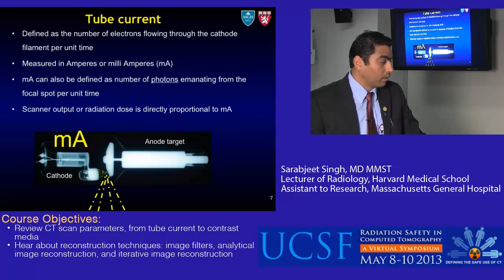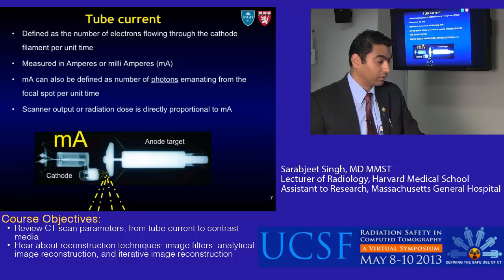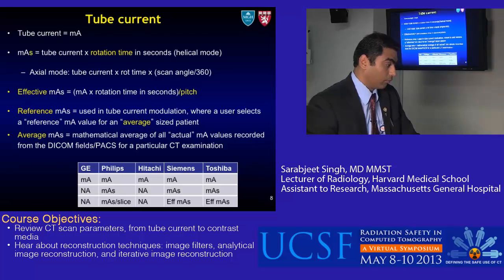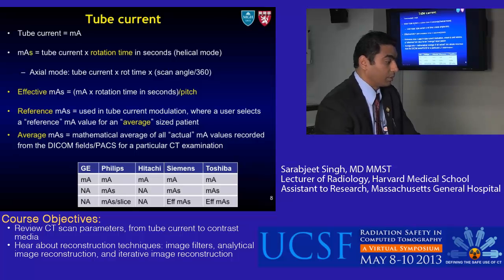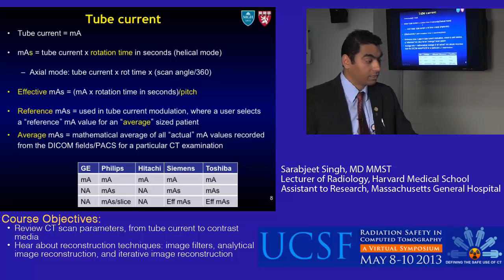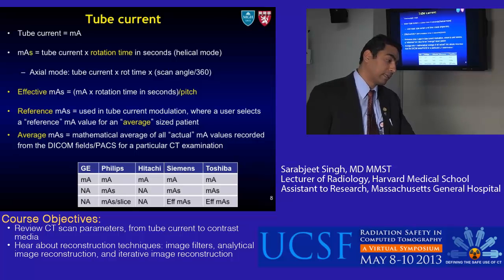Now let's look at tube current. Tube current is defined as the number of electrons flowing through the cathode filament per unit time, measured in amperes or in CT as milliamperes (mA). It can also be defined as the number of photons coming out of the focal spot per unit time — this is the scanner output or radiation dose, and it is directly proportional to the mA. A few related terms: mAs is tube current multiplied by rotation time in seconds in helical mode, or tube current multiplied by rotation time multiplied by scan angle divided by 360 degrees in axial mode.